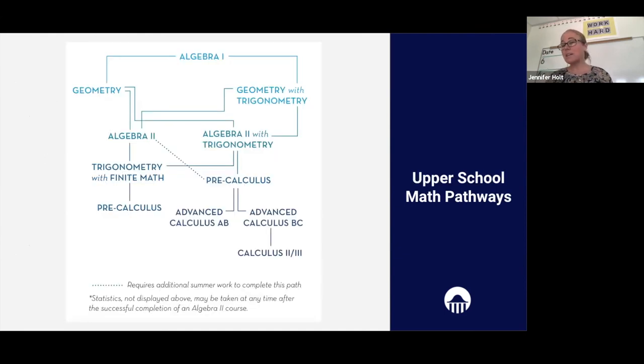Our last slide here just shows the pathways through the upper school math program. If you're thinking beyond just middle school, you can see that some students might begin with algebra in ninth grade, but many students have already taken algebra in eighth grade. So they're jumping into either geometry or geometry with trig. From there, there are multiple ways to move through the program, and then the highest level students are making it up through Calculus 2 and 3. Thank you all for your participation.